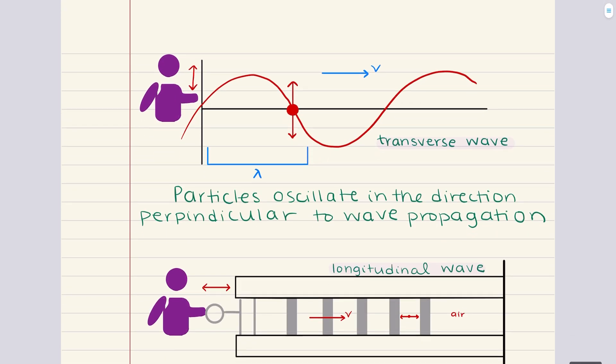In a transverse wave, the particles of the medium oscillate perpendicular to the direction that the wave is traveling. So you can think of the motion as moving up and down while the wave travels horizontally. This type of wave is common in systems like electromagnetic waves, where electric and magnetic fields oscillate perpendicularly to the direction the wave propagates. Additionally, surface waves on water will also follow this transverse motion with the water particles moving up and down while the wave itself travels forward.